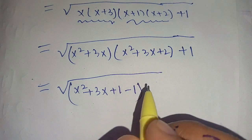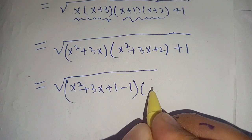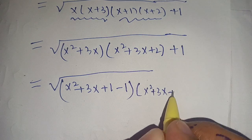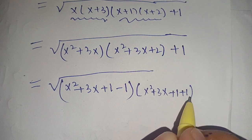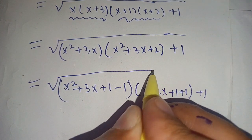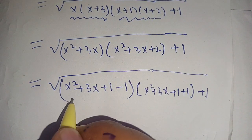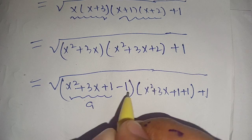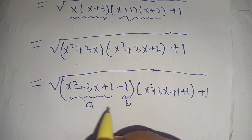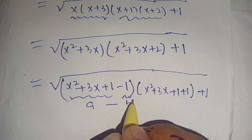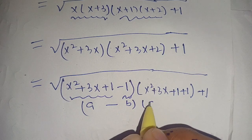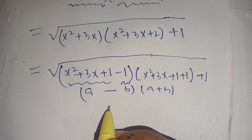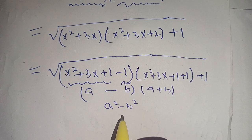In the next step we can write it as the square root of (x²+3x+1−1) times (x²+3x+2) plus 1. Suppose that x²+3x+1 is a and 1 is b. It is in the form of (a−b) times (a+b), and we know that (a−b)(a+b) equals a²−b².